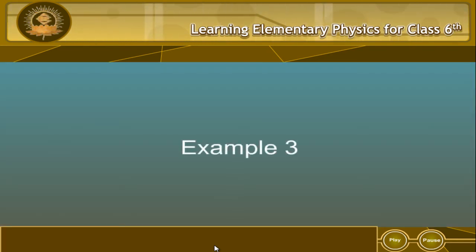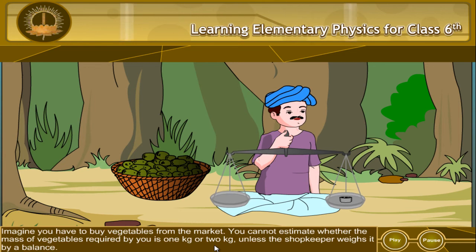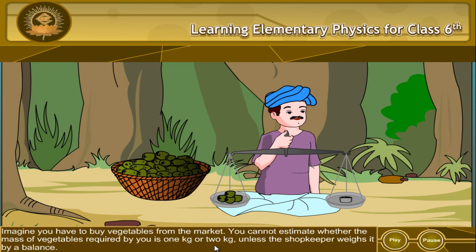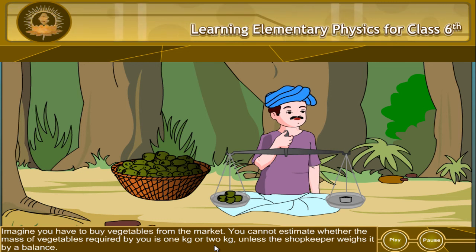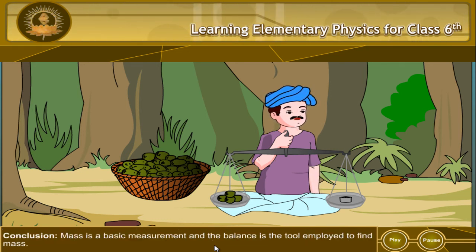Example 3. Imagine you have to buy vegetables from the market. You cannot estimate whether the mass of vegetables required by you is 1 kg or 2 kg unless the shopkeeper weighs it by a balance. Conclusion: Mass is a basic measurement and the balance is the tool employed to find mass.